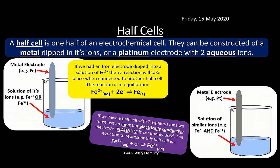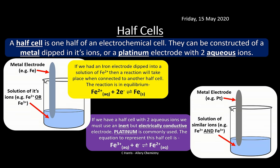Sometimes we have two metal ions with no solid version, so we use a platinum electrode instead. For example, the equilibrium between Fe²⁺ and Fe³⁺ — since both are aqueous, there's no solid metal. Platinum is expensive but has good electrical conductivity and is inert, so it doesn't interfere with the reaction — it simply conducts electricity.